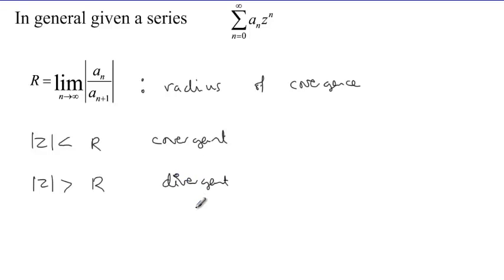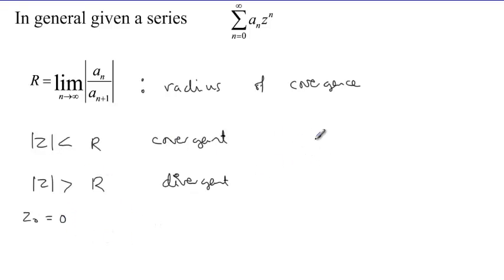Convergence and divergence are understood as follows: when we talk about convergence, the infinite sum is equal to a finite number. In the case of divergence, the sum goes indefinitely towards infinity. The center of convergence in the simplest case is z_0 equals 0, which corresponds to the series written in the form of a_n times z to the power n.